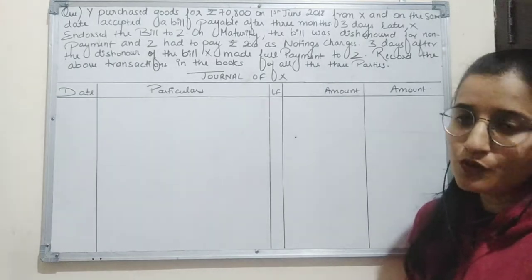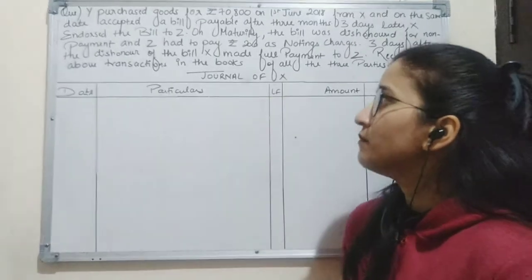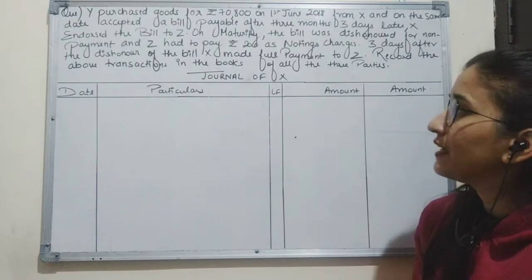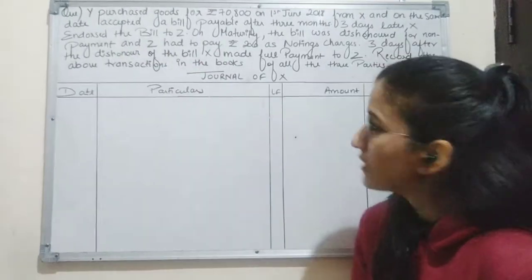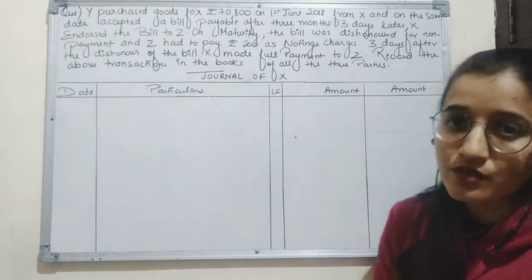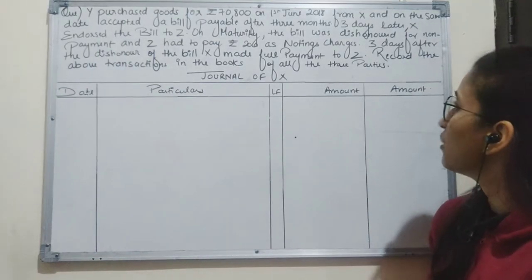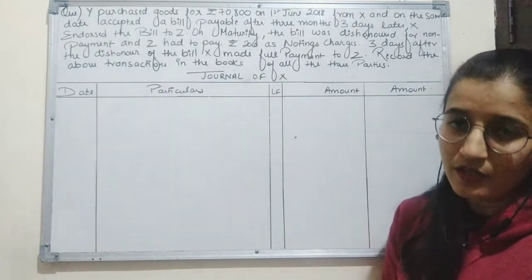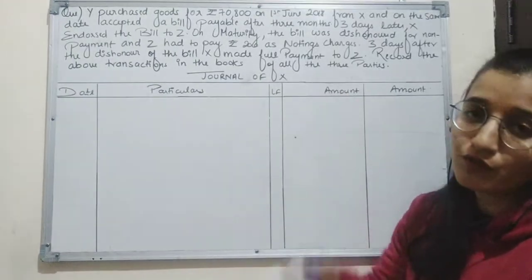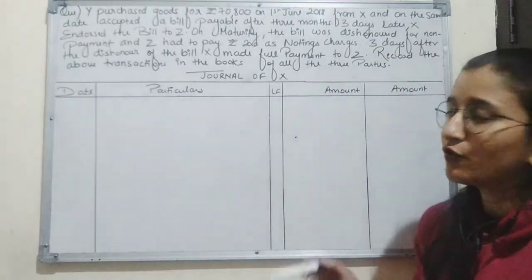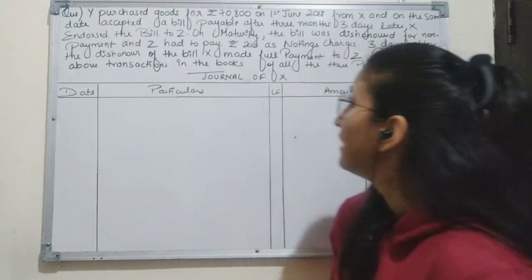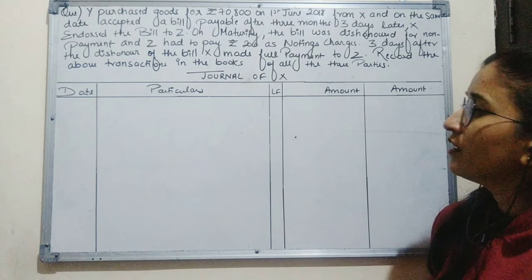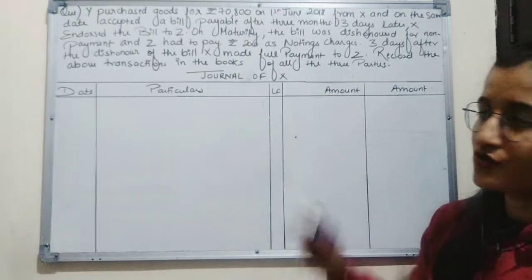According to the question, X sold goods to Y for Rs. 70,800 and drew a bill on Y for three months, which was accepted by Y on the same date. Three days later, X endorsed the bill to Z. On maturity, the bill was dishonored — meaning the acceptor refused to pay — and Z had to pay Rs. 200 as noting charges. The noting charges will be paid by the endorsee and ultimately recovered from the acceptor. Three days after the dishonor, X made full payment to Z, having received the amount of the bill from Y.